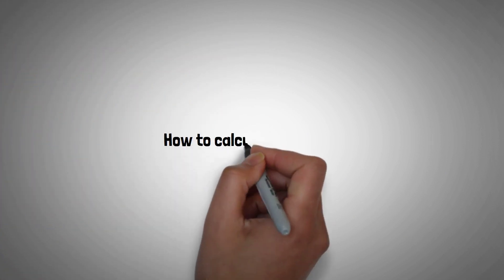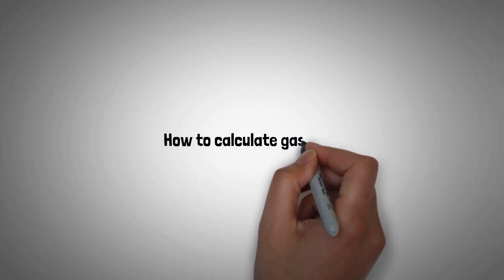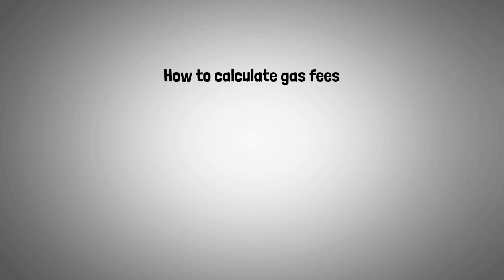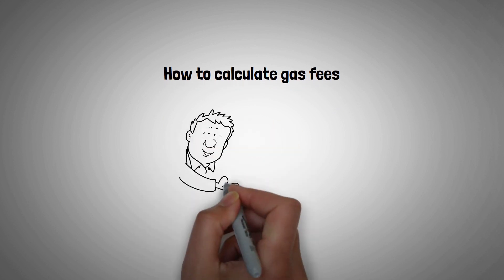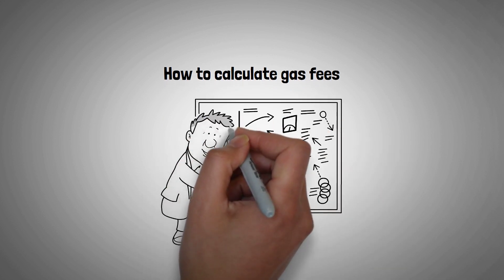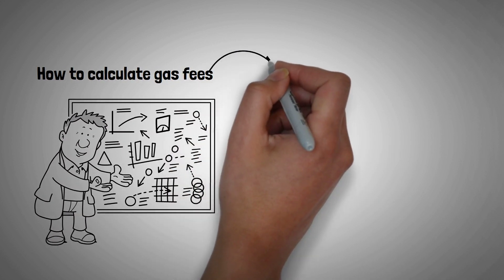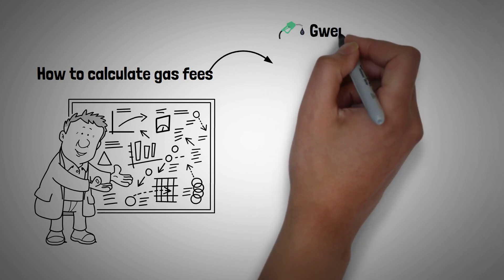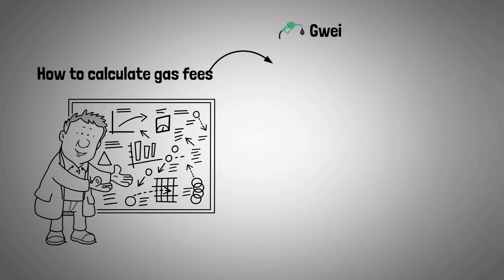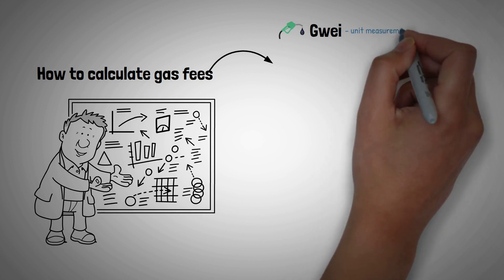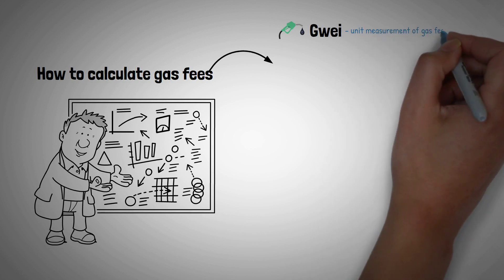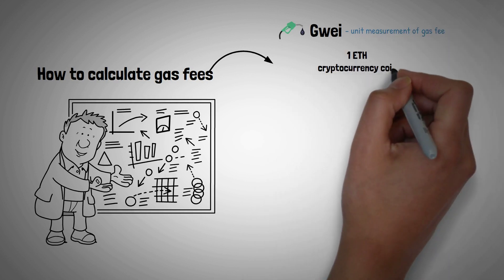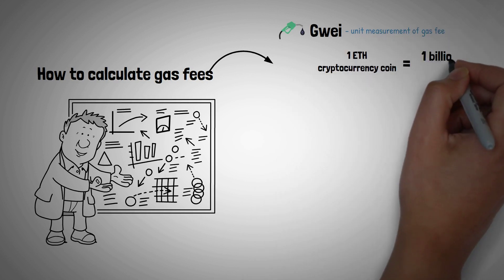Moving on, let's learn about how you can calculate gas fees. There is a formula you can use to calculate gas fees for each transaction, but there are a few key terms to understand first. The first is Gwei. In order to simplify the calculation, gas fees are measured in Gwei. One ETH cryptocurrency coin is equal to one billion Gwei — it's like converting dollars to cents for easier calculation.